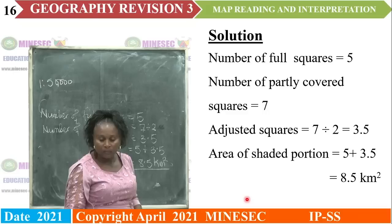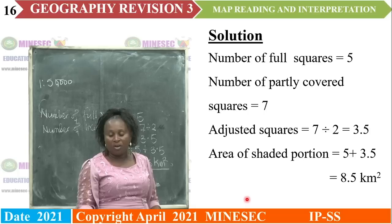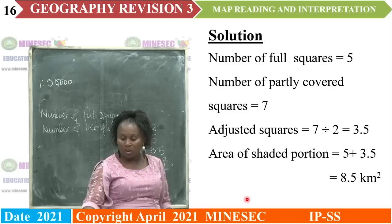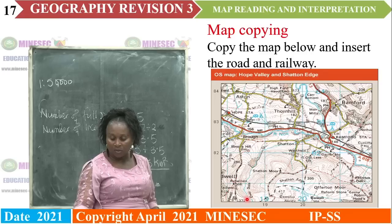The result is 8.5 square kilometers. Remember, an area is expressed in square kilometers. Our answer is 8.5 square kilometers. Number of full squares: 5. Number of partly covered or incomplete squares: 7. Adjusted squares: 7 divided by 2 gives us 3.5, and the final answer is 8.5 square kilometers.